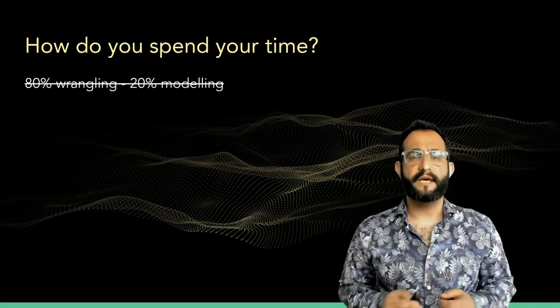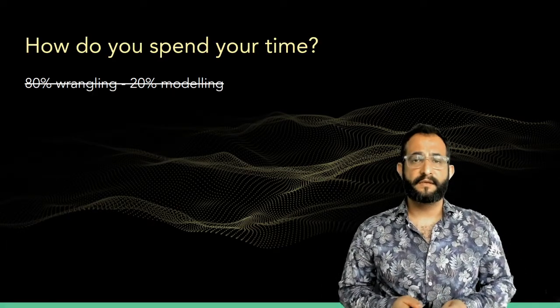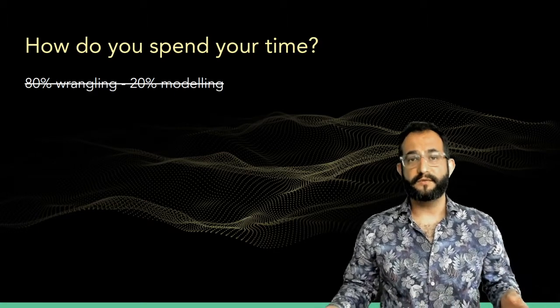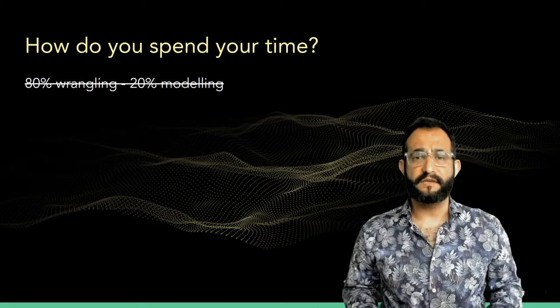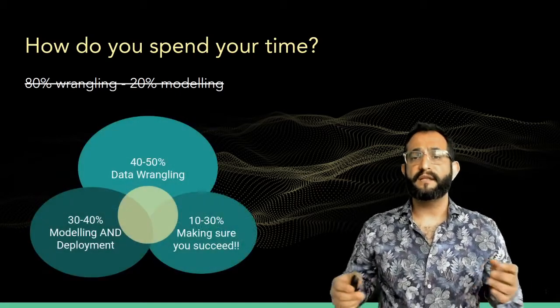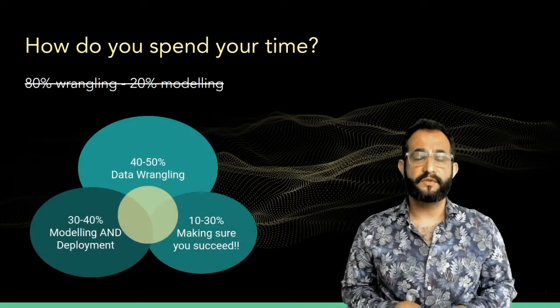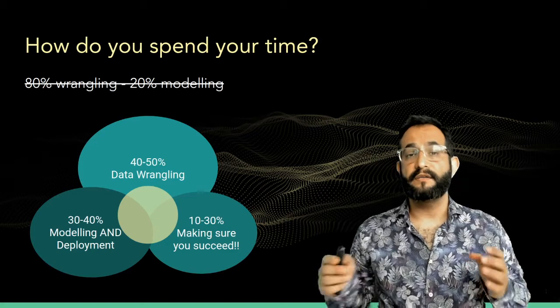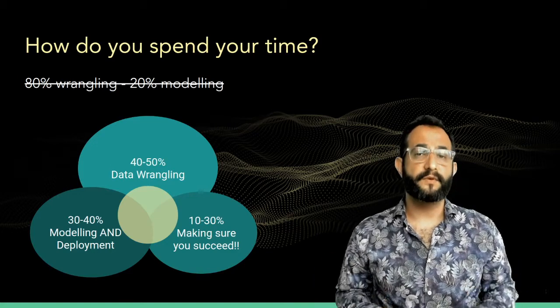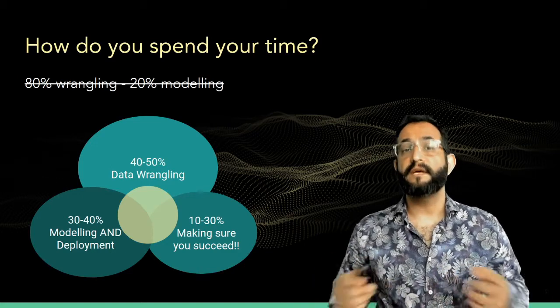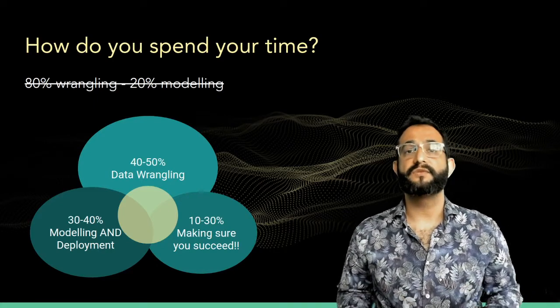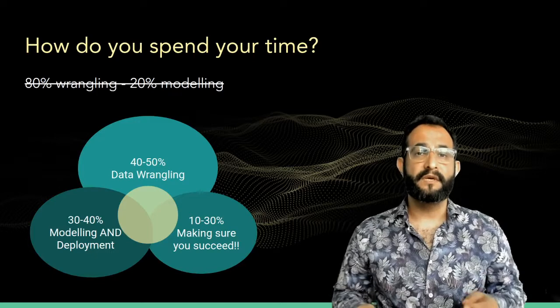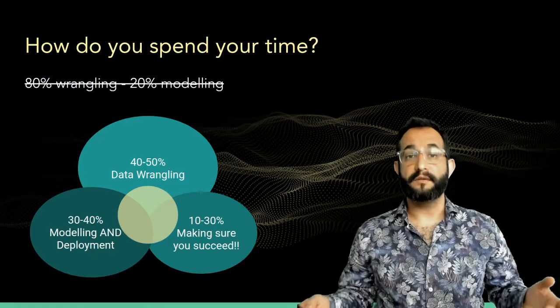For starters, let's see how you spend your time. The usually quoted 80-20 rule for data science is at least very out of date, if not incorrect. In reality, I think you should spend about 40 to 50 percent of your time on data handling, about 30 to 40 percent on modeling and deployment, and about 10 to 30 percent on making sure that you succeed by addressing all the problems, not just the modeling part.